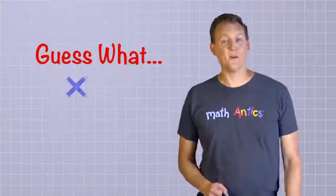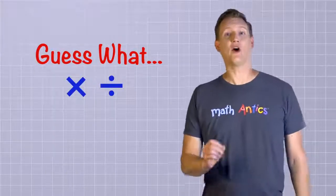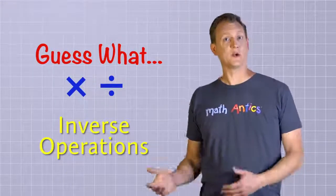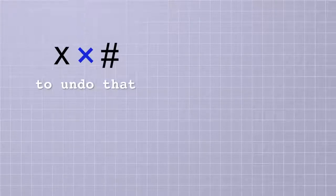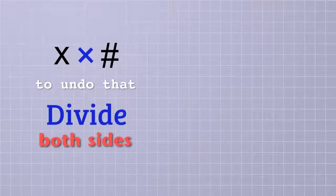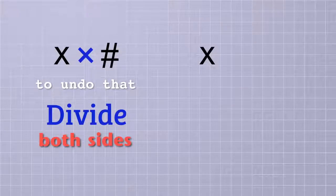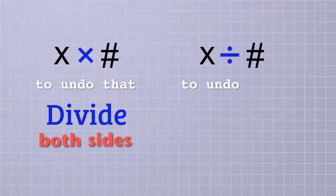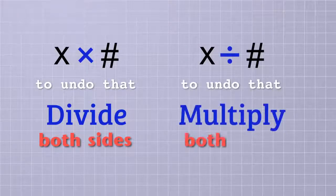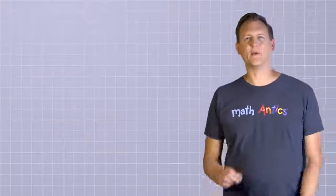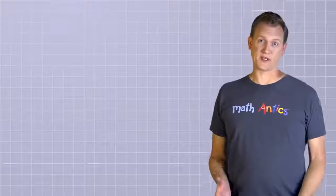Well guess what? Multiplication and division are also inverse operations, so we can use them to undo each other too. If an unknown is being multiplied by a number, to undo that we need to divide both sides by that number. But if an unknown is being divided by a number, to undo that we need to multiply both sides by that number. Now don't worry if that sounds a little confusing right now. It'll make a lot more sense after you've seen a few examples.